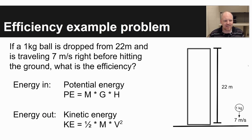And so what you've got as an energy in is potential energy, which you can solve by taking mass times gravity times height. Your energy out, you have kinetic energy, which is one-half times mass times velocity squared.